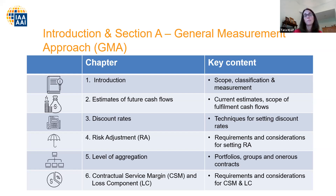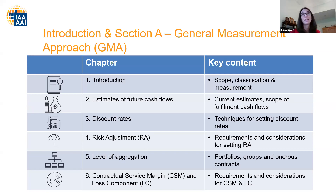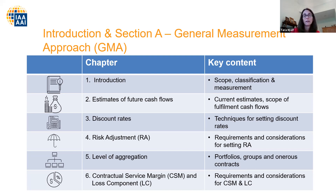Chapter two goes into the general measurement model. It talks about how future cash flows should be estimated, the discount rate approach for discounting best estimate cash flows, the risk adjustment for non-financial risks, and the contractual service margin and loss component. Chapter two specifically covers how cash flows should be determined — how do you determine what cash flows are in or out — and whether stochastic modeling is needed for certain types of products.